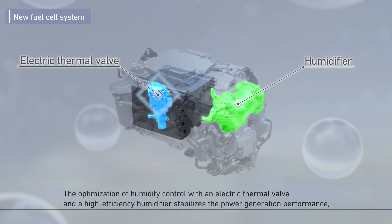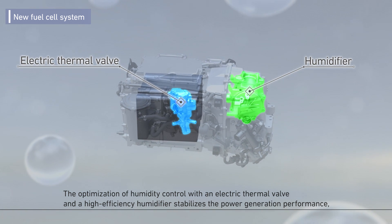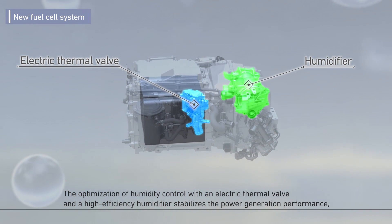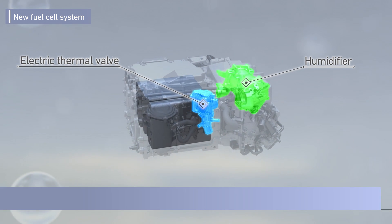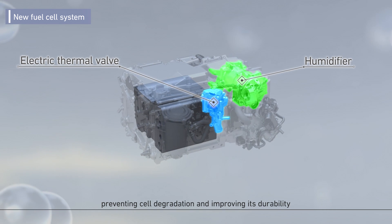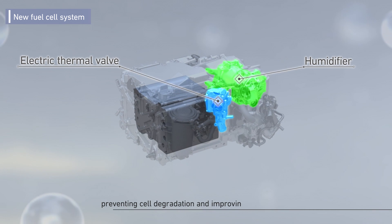The optimization of humidity control with an electric thermal valve and a high efficiency humidifier improves the stability of power generation performance. This also prevents cell degradation and improves durability.